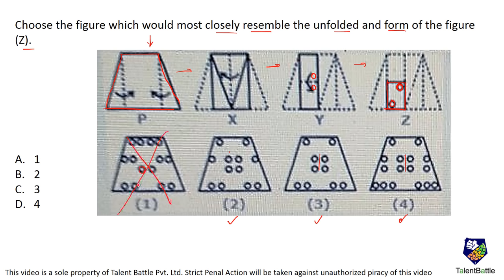Now there is a cut at the center, and there is a fold here. If there is a cut over here, there is definitely going to be a cut here as well, so for every diagram it is there. Now if there is a cut at the bottom, there is also going to be a cut on the other side because it has been folded - two have to be there. There is no cut at this corner, so there should not be any cut there, and option 4 gets eliminated.